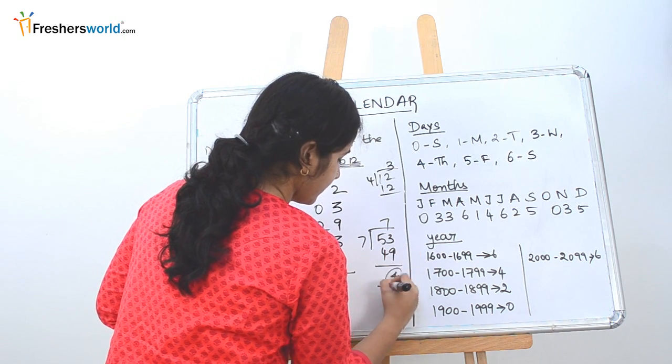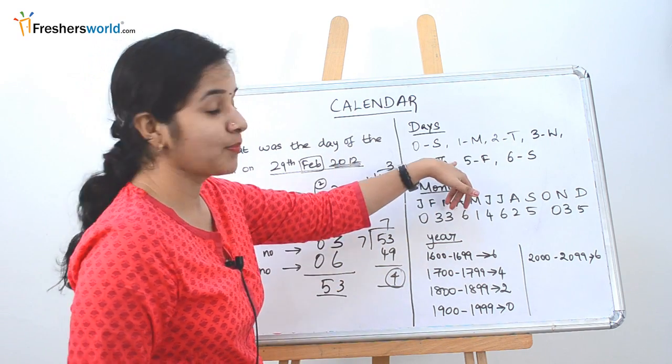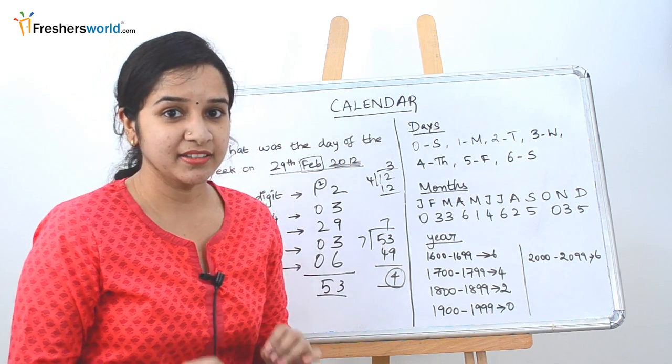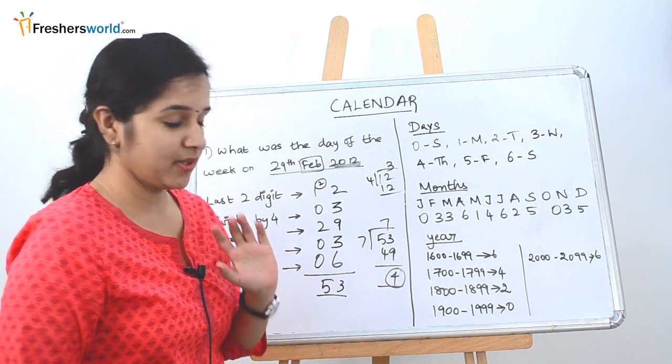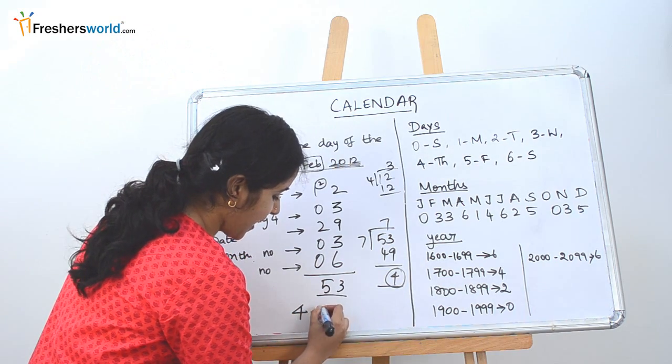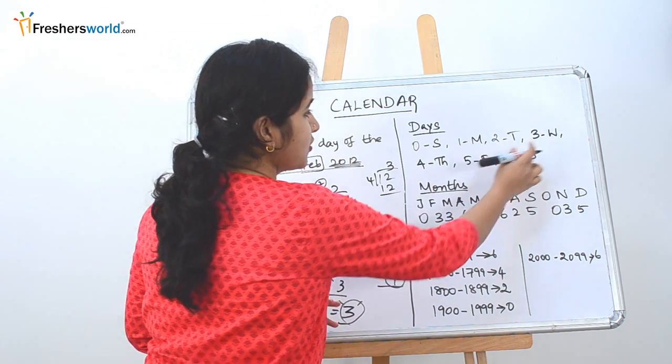So generally for a normal year, what do we do? We take 4 and we find the corresponding number for that. So 4 is nothing but Thursday. But here the catch is they've asked for a leap year. So what do we do? The same step we are going to do. Take 4 subtracted by 1 which is nothing but 3. So 3 corresponds to nothing but Wednesday.